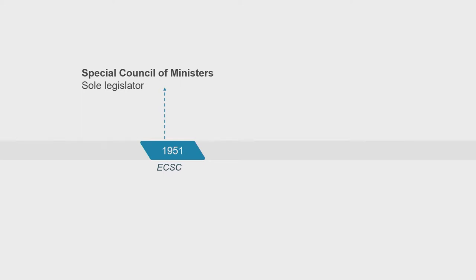Let's start by looking at the Council's historical evolution. The Council of the EU itself has remained relatively unchanged over the course of EU history. The European Coal and Steel Community included a so-called Special Council of Ministers, which was the predecessor of the Council of the European Union as we know it today. Its role and voting rules, however, have evolved over the course of EU history. Until the Maastricht Treaty, the Council was the sole legislator.